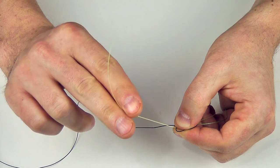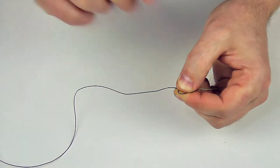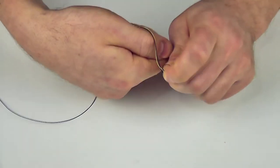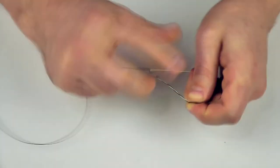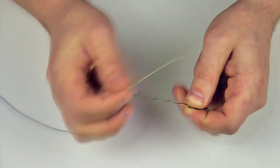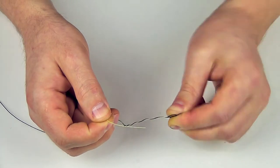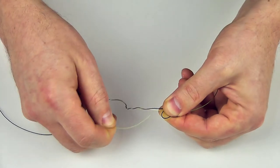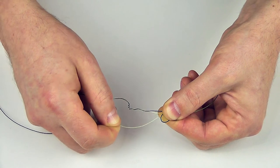And start to wind the main line around the shock leader. We have to do 6 rounds. And pull it into this gap between the main line and the shock leader.